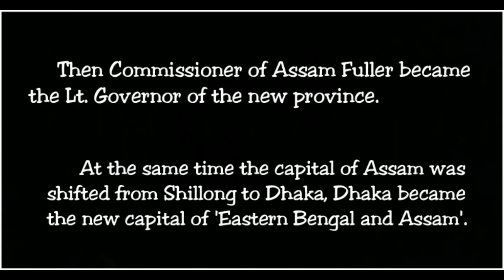Then Commissioner of Assam, Fuller, became the Lieutenant Governor of the new province. At the same time, the capital of Assam was shifted from Silong (Shillong) to Dhaka.